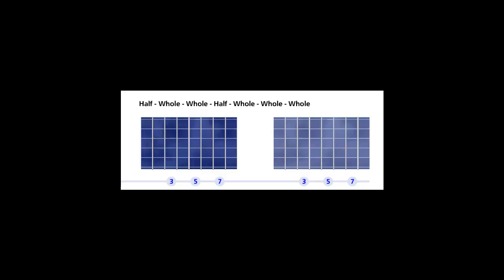The key of B Locrian is the only key that has all natural notes or tones. The remaining eleven keys need accidentals applied to the steps according to the Locrian Mode 7 formula.